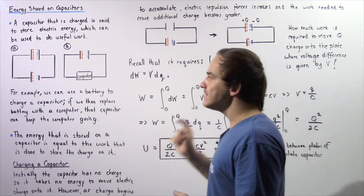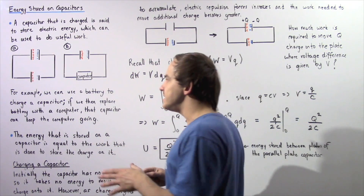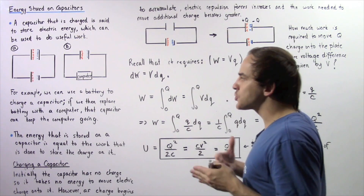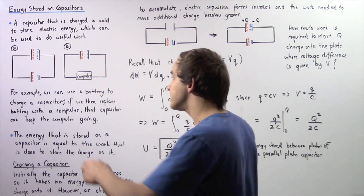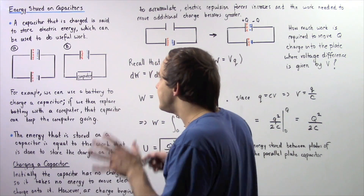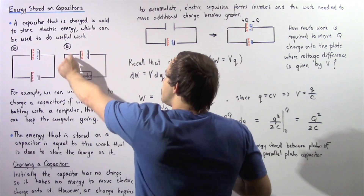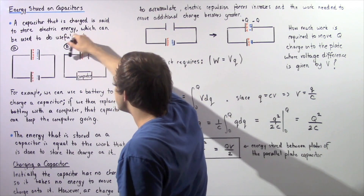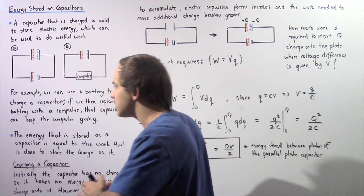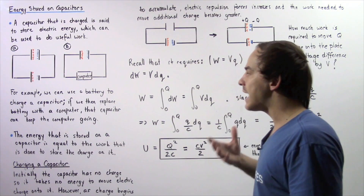At this point, our capacitor is said to be fully charged. Now, let's suppose we take our battery out of our circuit and instead place into our circuit a device that requires electricity — for example, a computer. Electrons will begin to flow from the lower potential plate of our capacitor to the higher potential plate, traveling in this direction. Because electrons begin to move, that movement will be able to do useful work on the computer and will power it.